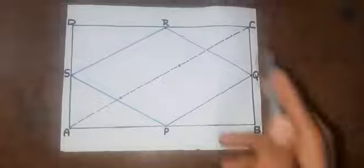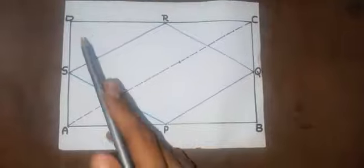Here we have a rectangle ABCD in which points PQRS are midpoints of AB, BC, CD and DA. Now we have to prove that PQRS is a rhombus.